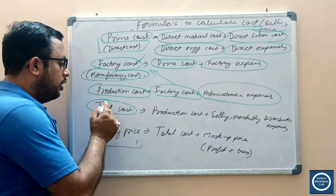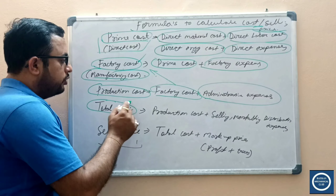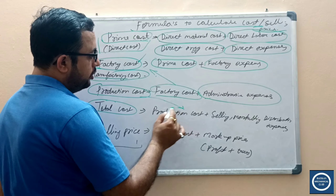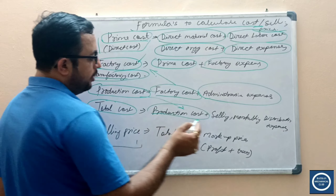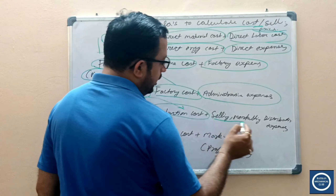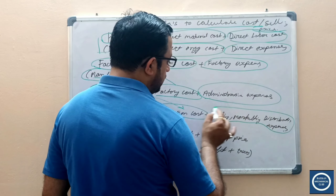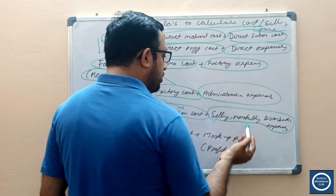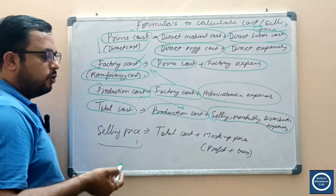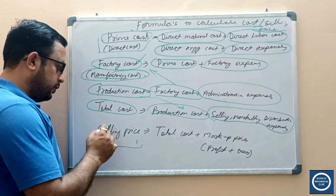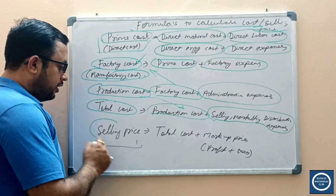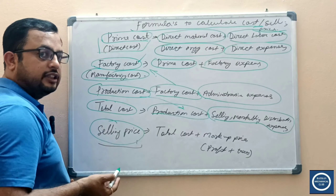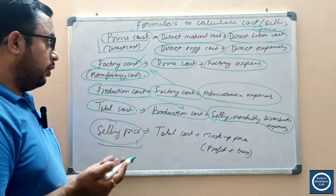Now we have to calculate the total cost. Total cost is the sum of your production cost plus selling, marketing, and distribution expenses. A separate video on that topic is also available for reference.